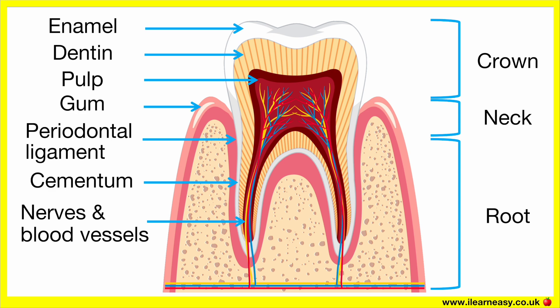Gum. The gum is the soft tissue surrounding the base of the teeth. The gums help to protect the roots of the teeth and support overall oral health by sealing the area where the tooth and jaw meet. The bone plays a crucial role in supporting and anchoring your teeth.